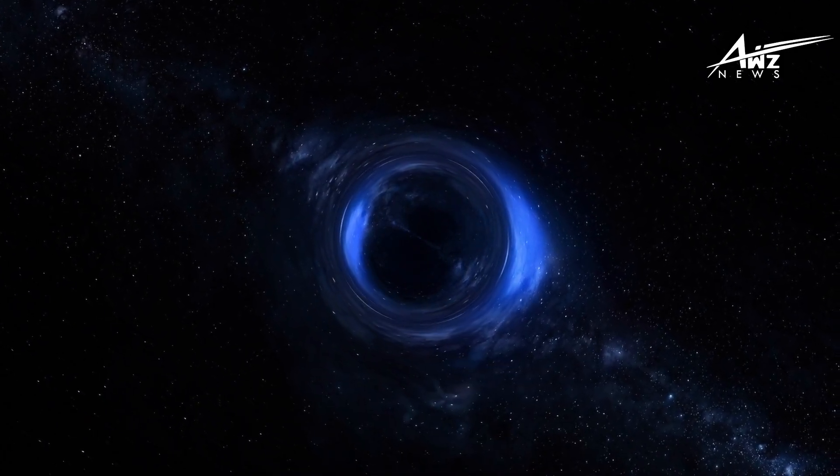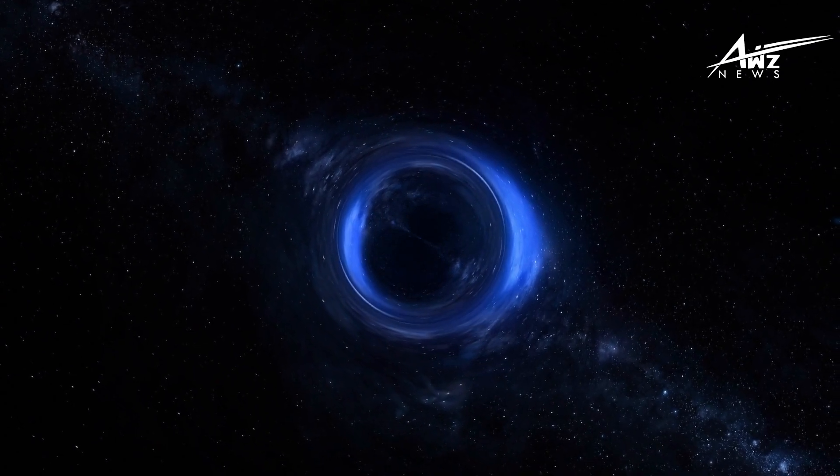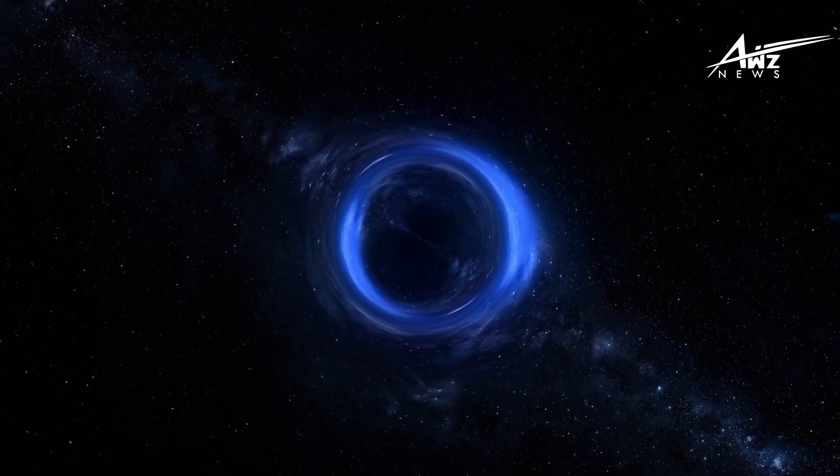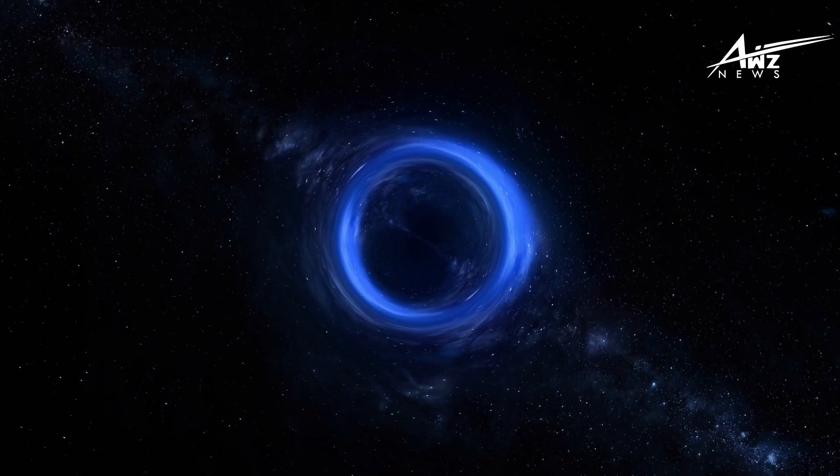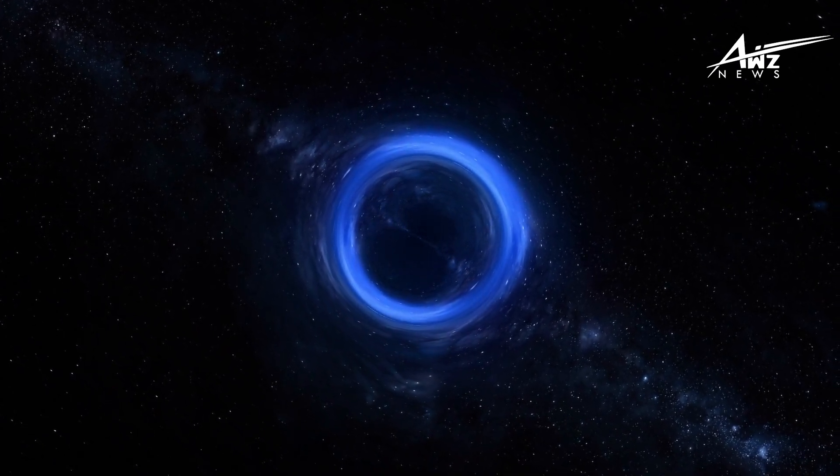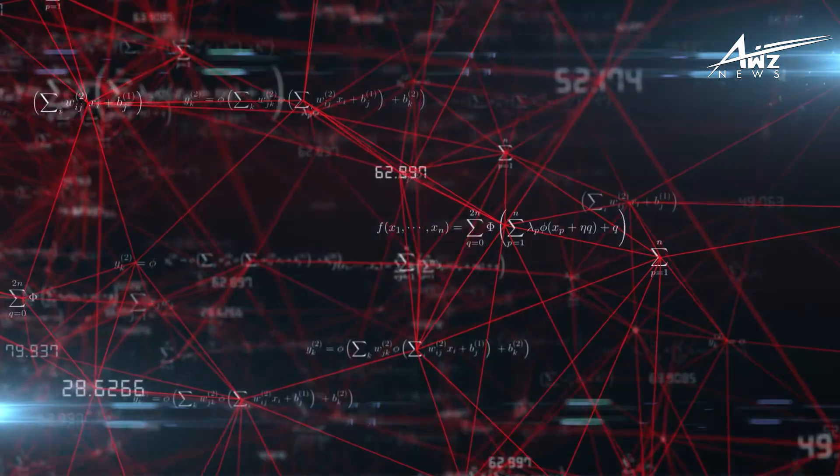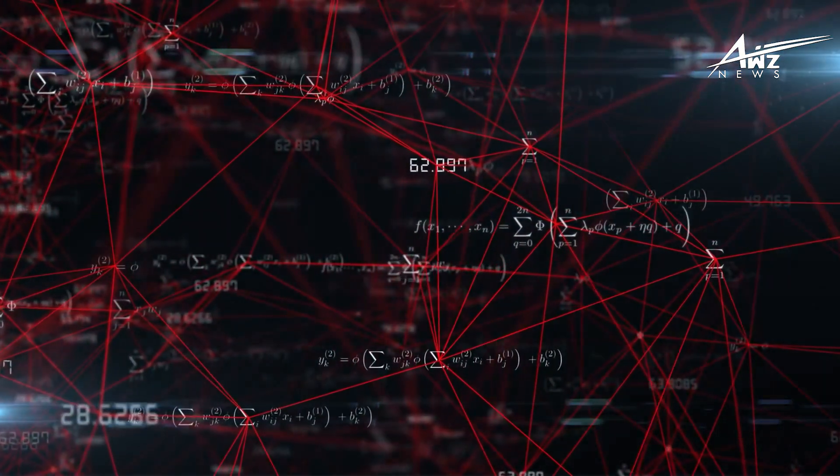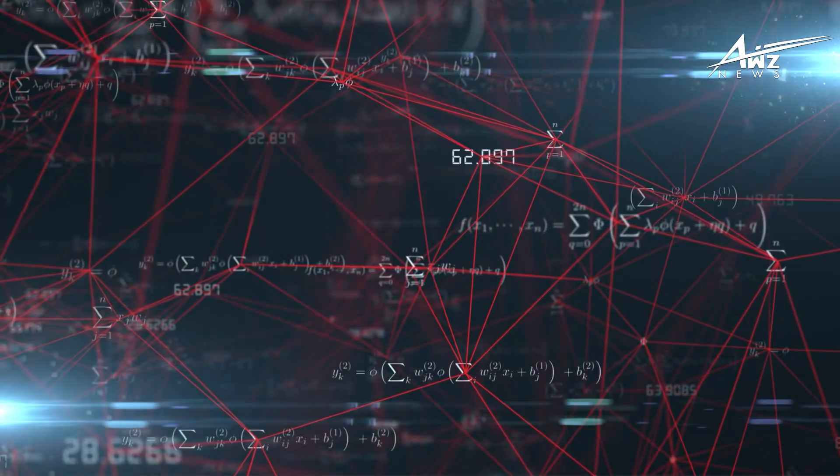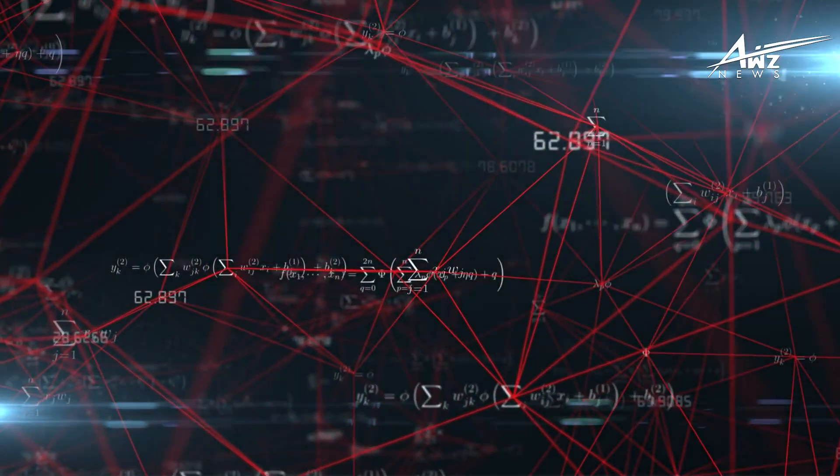Before the Penrose singularity theorem, it was generally believed that geodesics had no end. An object might travel along a segment of a geodesic, for example, a ball being thrown on a parabola. But the geodesic itself can be traced both backwards and forwards beyond the ball's trajectory. Nevertheless, Roger Penrose didn't exactly prove the existence of singularities, not explicitly anyway.